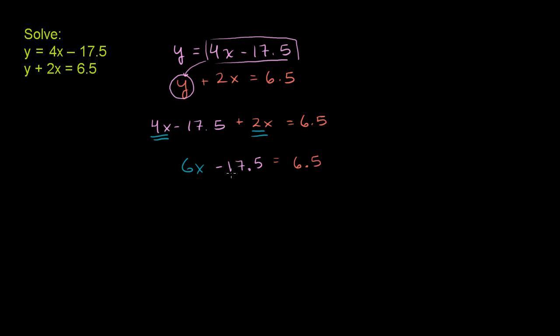Then we can get the 17.5 out of the way by adding it to both sides of the equation. So let's add positive 17.5 to both sides. And we are left with 6x on the left-hand side, because these cancel out.